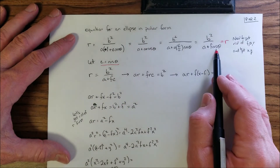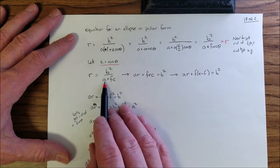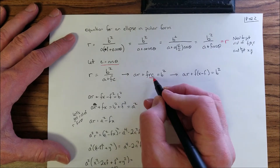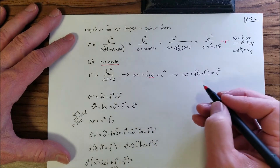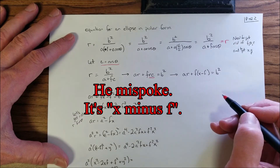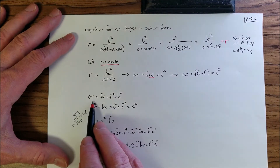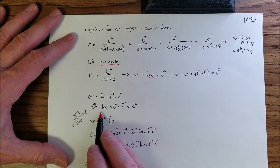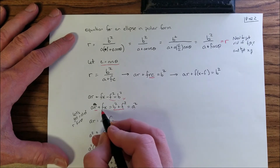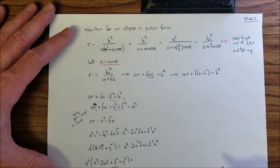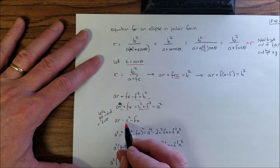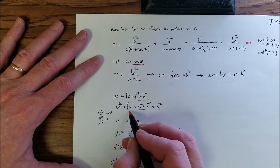Multiplying both sides by (a plus fc) and distributing r gives r·a plus r·f·c equals b squared. Since r cosine theta equals x minus f, substituting gives a·r plus f(x plus f) equals b squared. Distributing f and adding f squared to the other side, and using b squared plus f squared equals a squared, simplifies the expression. We still have r and f to eliminate, so let's get rid of r first.